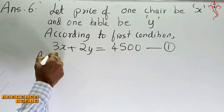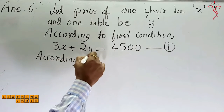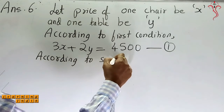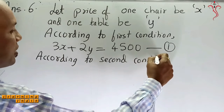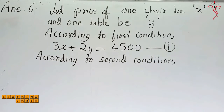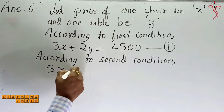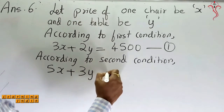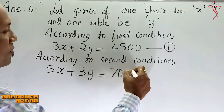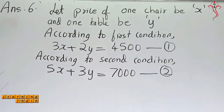Now according to the second condition, the price of 5 chairs and 3 tables is 7000. So 5 into X plus 3 into Y equals 7000. This will be our equation number 2: 5X plus 3Y equals 7000.